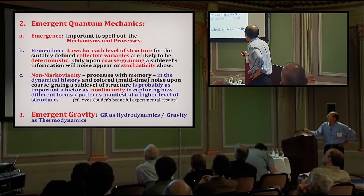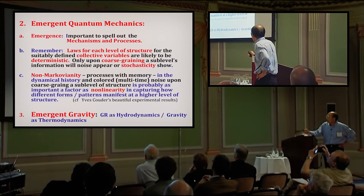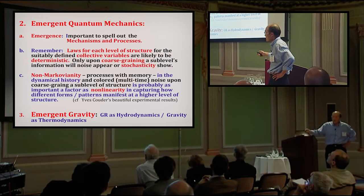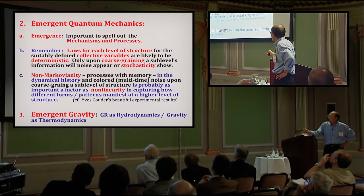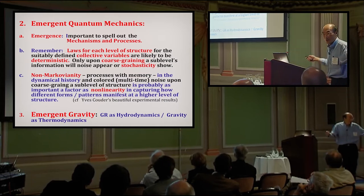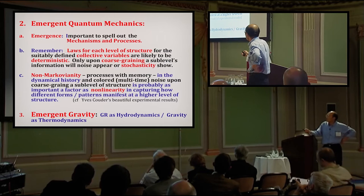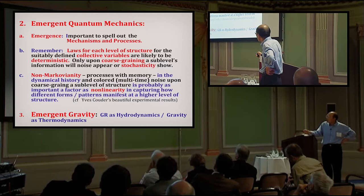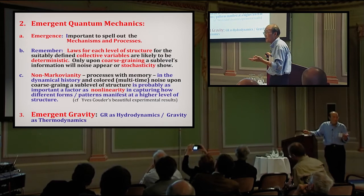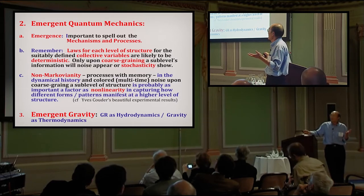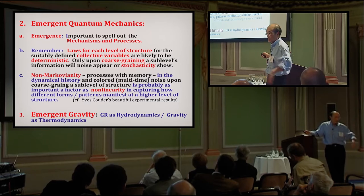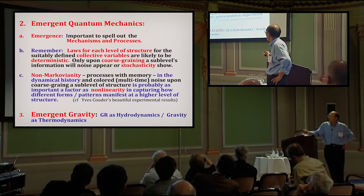So a summary on emerging quantum mechanics. In so far as emergence is concerned, now it's sort of a very pretty, even sexy word. But it's not enough to say this is emerging, that's emerging, that's not telling me anything. It's important to spell out the mechanisms and processes. That is not easy at all. I don't need to mention biology, consciousness, all that. We're all made up of molecules and atoms, but what is this consciousness? Now remember laws for each level of structure for suitably defined collective variables. This is very important.